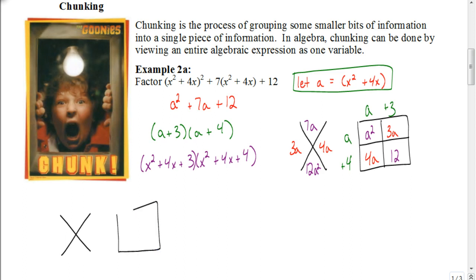So let's use the xbox method now for this first set, the x² + 4x + 3. Again we'll put the middle term here. Multiply the 3 and the x² together we get 3x². Put the x² over here and the 3 here.